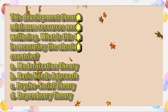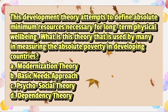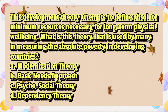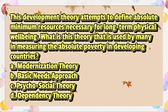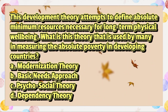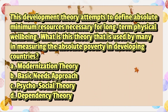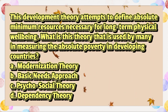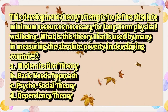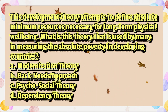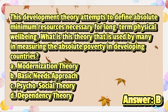This development theory attempts to define absolute minimum resources necessary for long-term physical well-being. What is this theory used by many in measuring absolute poverty in developing countries? A. Modernization theory. B. Basic needs approach. C. Psycho-social theory. D. Dependency theory. The answer is letter B.